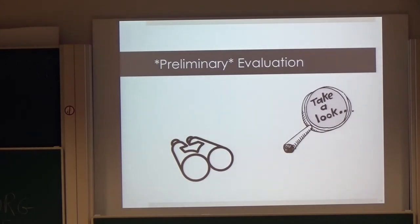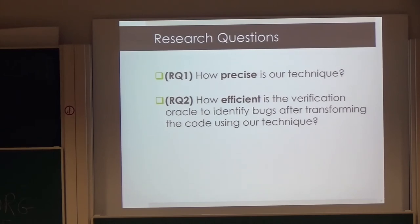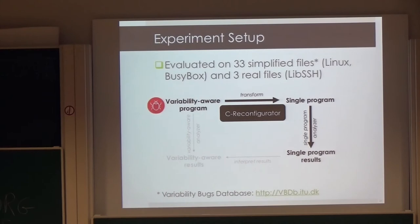Now I'll talk about the preliminary evaluation. We asked two questions. First: how precise is our technique — does the rewriting variability transformation preserve the semantics of the program, including all execution traces, including the erroneous ones? Second: how efficient are the analysis tools when run on our reconfigured program? We used three subject systems: Linux, BusyBox, and LibSSH, and evaluated on 36 files from those systems.